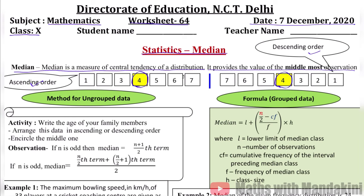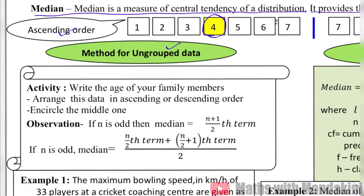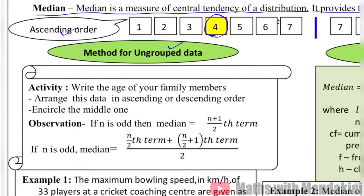We have two methods: for ungrouped data and grouped data. Ungrouped data was already discussed in class 9th, so let's review it once more. Let's do an activity: write the ages of your family members, arrange this data in ascending or descending order, and circle the middle one.